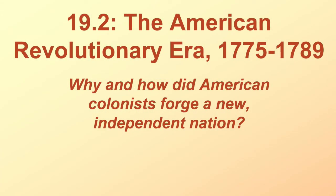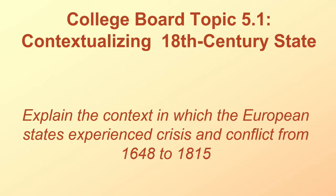This is Lesson 19-2, the American Revolutionary Era from 1775 to 1789. The question is: how and why did American colonists forge a new independent nation? We get to spend a little time on the other side of the pond. This course is officially called European History. However, if you live in America, no matter where you're from originally, you are by default an inheritor of European history and Western Civilization.